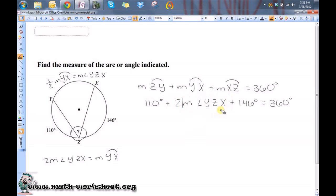Okay, so let's combine our constant terms here. So, I have 2 times the measure of angle YZX, plus 256 degrees, is equal to 360 degrees. Now, let's subtract 256 degrees from both sides. So, 2 times the measure of angle YZX, is equal to 104 degrees.